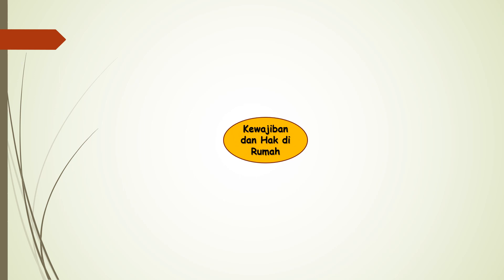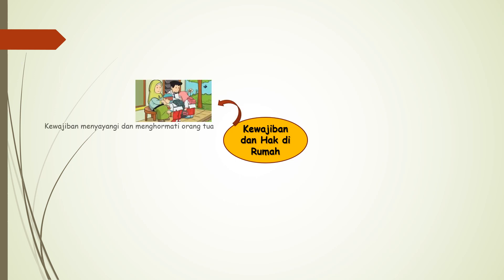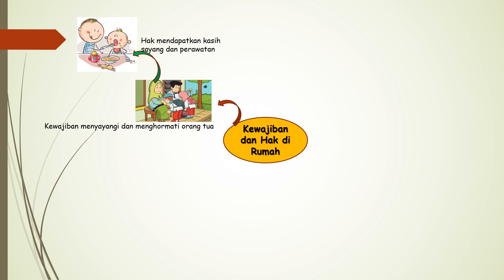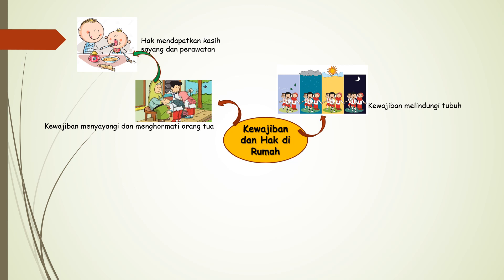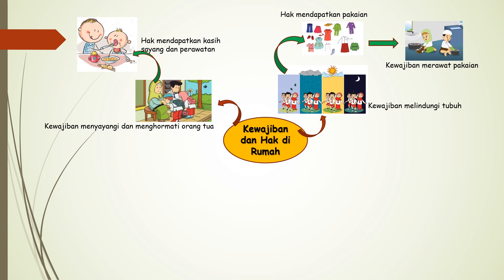Berikutnya kita akan membahas lebih dalam tentang kewajiban dan hak di rumah. Begitu banyak kewajiban dan hak yang kita miliki di rumah. Beberapa di antaranya adalah kewajiban menyayangi dan menghormati orang tua. Maka hak yang akan kita dapatkan dari orang tua adalah hak mendapatkan kasih sayang dan perawatan. Kita juga memiliki kewajiban melindungi tubuh dari cuaca yang tidak sehat bagi tubuh kita.